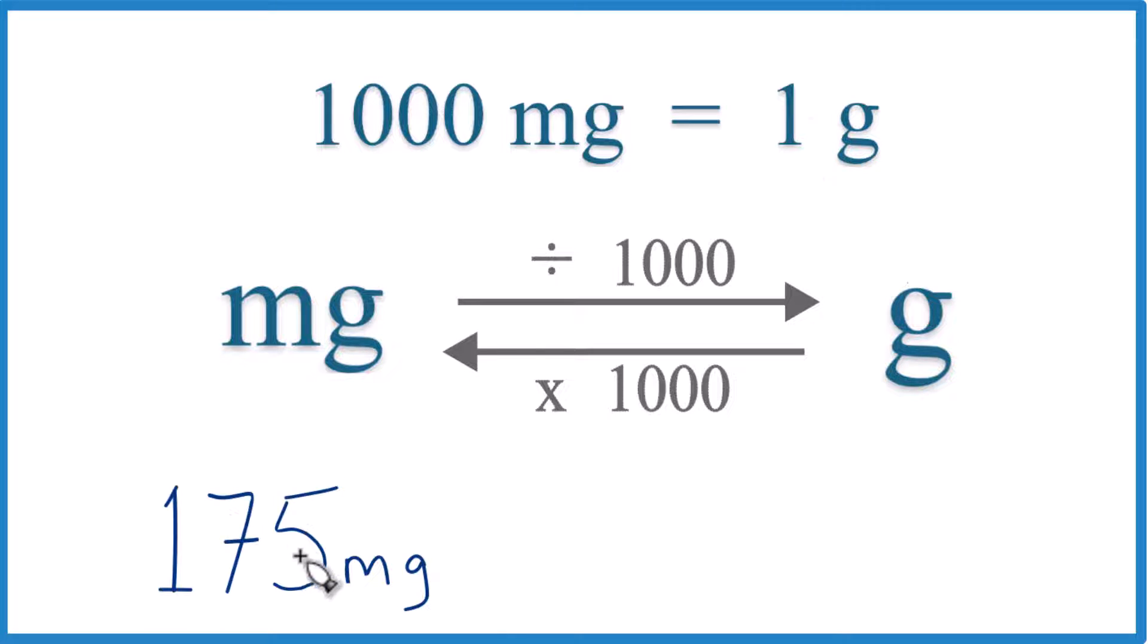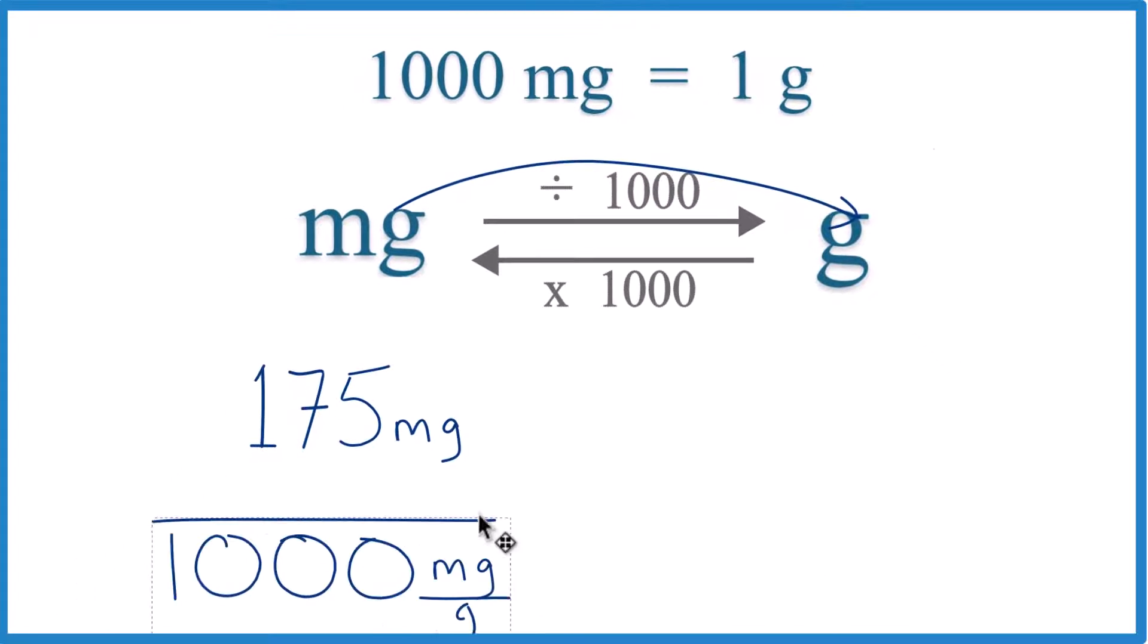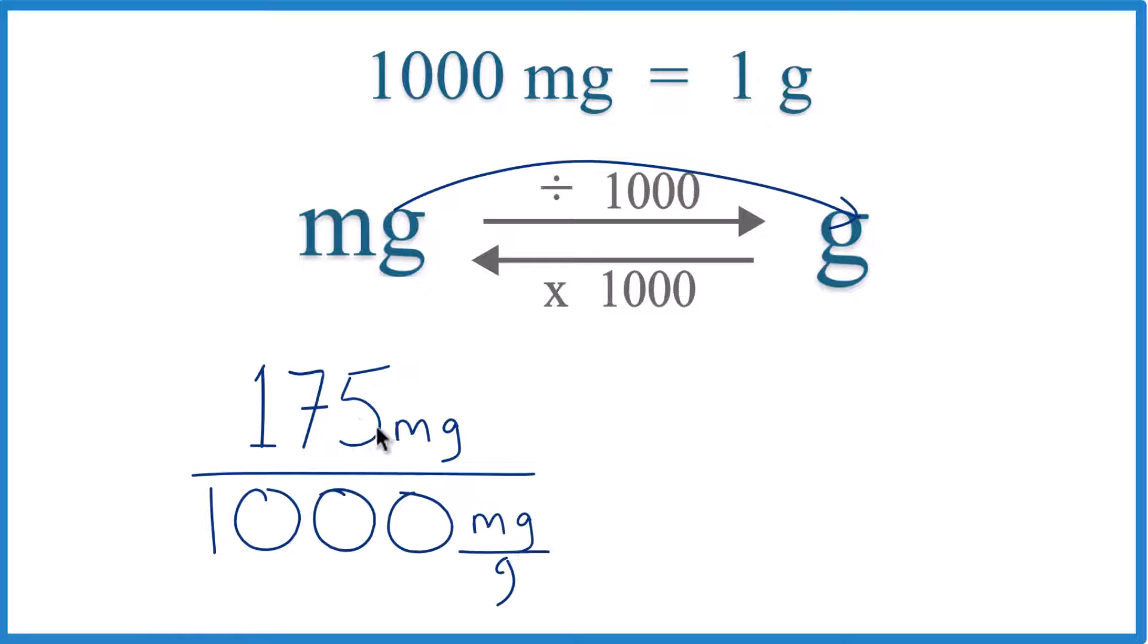Since we have 175 milligrams and we're going to grams, we're going to divide by 1,000, like this here. And you can see we have our 175 milligrams.